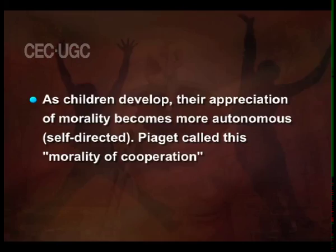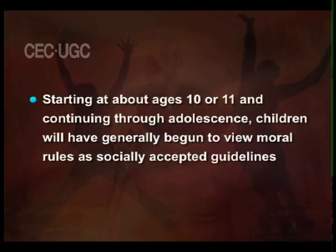Towards the end of middle childhood, children's appreciation of morality changes as a result of their recently developed ability to view situations from others' perspectives. As children develop, their appreciation of morality becomes more autonomous, that is, self-directed. Piaget called this morality of cooperation. Starting at about ages 10 or 11 and continuing through adolescence, children will have generally begun to view moral views as socially accepted guidelines. Children still feel that it is important to follow rules, but these rules are viewed as complex, somewhat negotiable guidelines that are meant to improve everyone's lives.